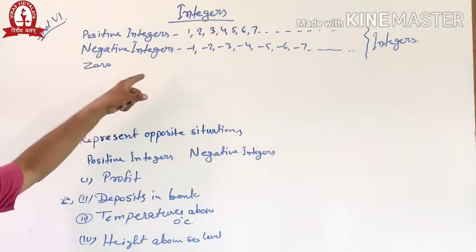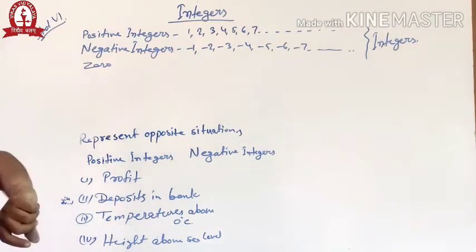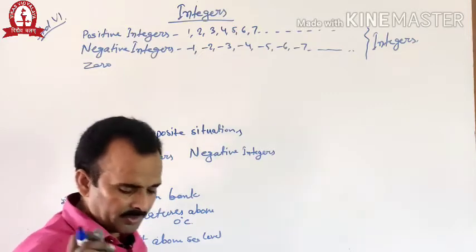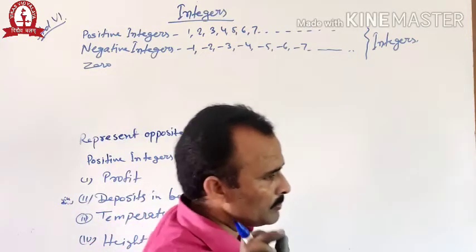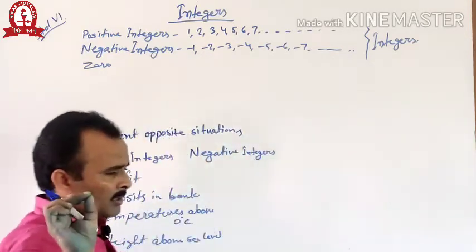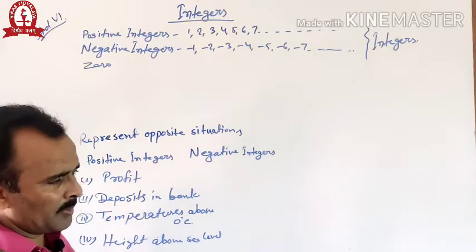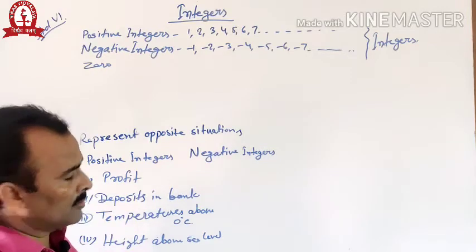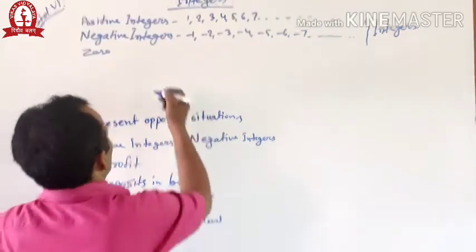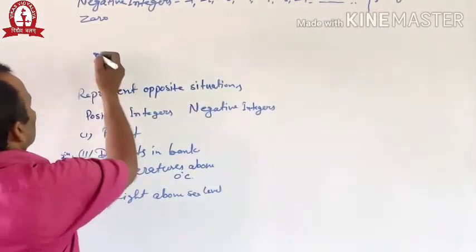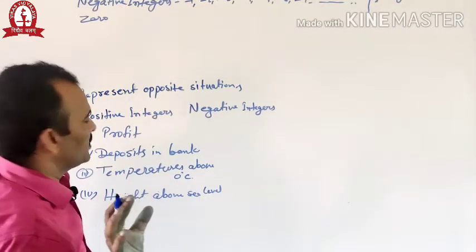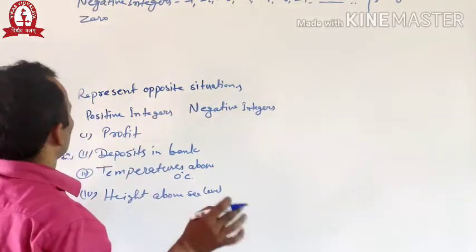Zero is neither a positive integer nor a negative integer. Now I want to explain some integers on a number line.